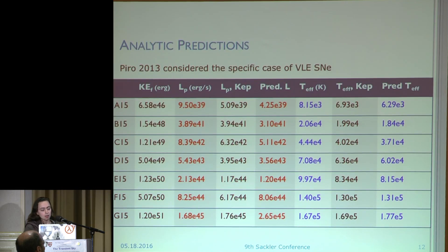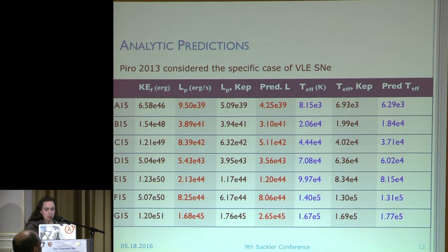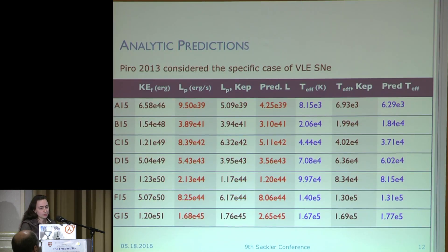Some quick comparisons to analytics: Puro 2013 considered the specific case of breakout in low energy supernovae and gave some formulas to guide observers on luminosity and observed temperature. Our results versus the predictions for luminosity and effective temperature don't do too badly — the analytic predictions are not exactly on the nose, but they're pretty good. However, you have to use the final kinetic energy in these equations to get a reasonable prediction. If you use the kinetic energy at breakout, they're actually pretty far off — so that's something that needs looking into, because how is the breakout supposed to know what the ultimate final kinetic energy of the supernova is?